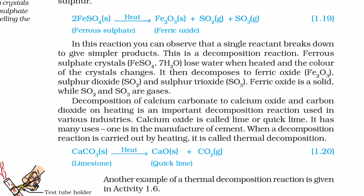Ferrous sulphate crystals, FeSO4·7H2O, lose water when heated and the color of the crystals changes. It then decomposes to ferric oxide (Fe2O3), sulphur dioxide (SO2), and sulphur trioxide (SO3). Ferric oxide is a solid, while SO2 and SO3 are gases.